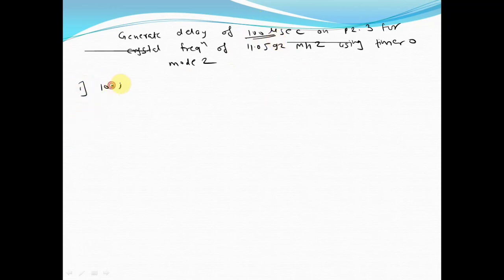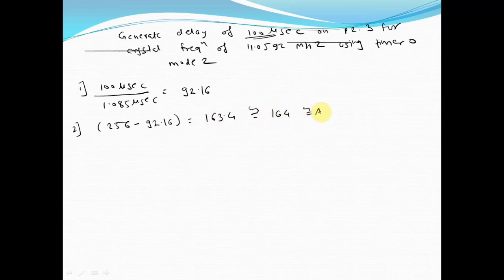In the first step, you have to divide 100 microseconds by 1.085 microseconds. This comes out to be 92.16. As it is an auto-reload 8-bit timer, you have to subtract this count from 256. When you subtract it, it gives you 163.4. If you make it a round figure, you can take it as 164, which corresponds to A4H count.